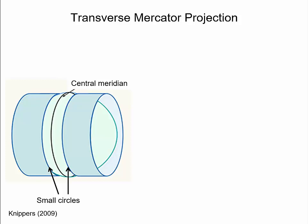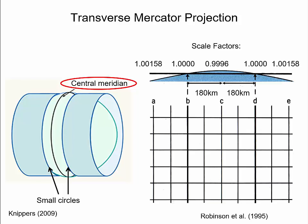The UTM grid system uses for each of its 60 zones a transverse Mercator projection that can map a region of large north-south extent with only low distortion. The transverse Mercator projection uses a cylinder that is horizontally oriented relative to the Earth. In the secant case, the cylinder intersects the reference Earth ellipsoid along two small circles parallel to the central meridian. Each zone has a central meridian which extends north-south along the middle of the zone. The cross section of a UTM zone illustrates the mapping plane and the reference ellipsoid.